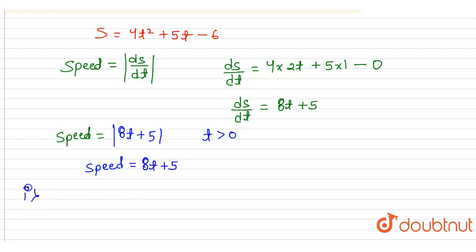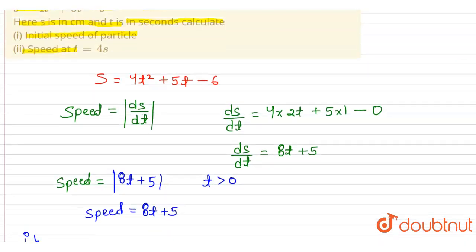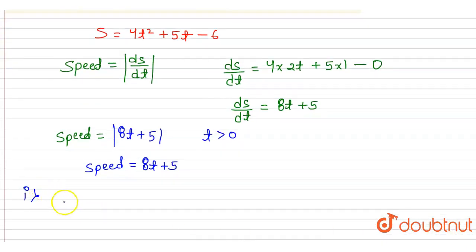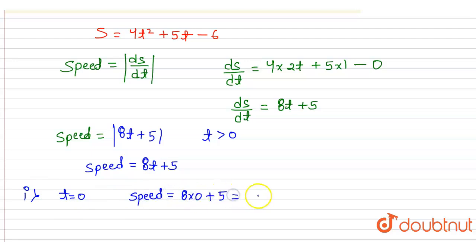In the first part we have to find the initial speed of the particle. For finding initial speed we evaluate at t = 0. So initial speed = 8 × 0 + 5 = 5 centimeters per second. So the initial speed is 5 cm/s. This is our first answer.